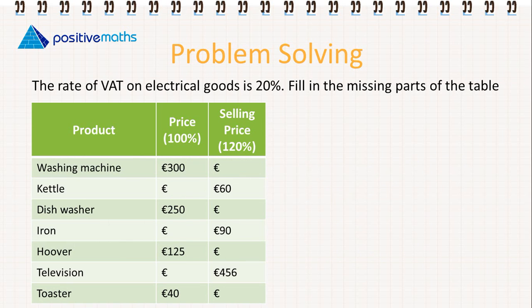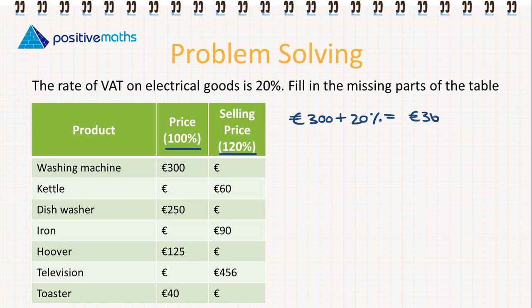Problem solving: the rate of VAT on electrical goods is 20%. We'll take a few examples and you can pause the video to calculate the rest yourselves to practice. For the washing machine, 100% of the price plus 20% VAT means the selling price is 120%. The washing machine is €300, so 300 plus 20% gives an answer of €360.